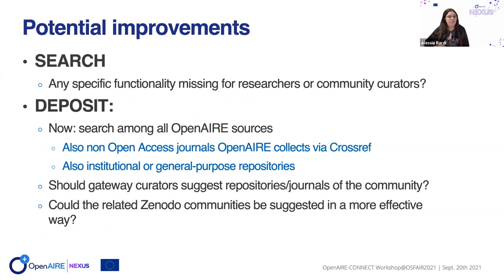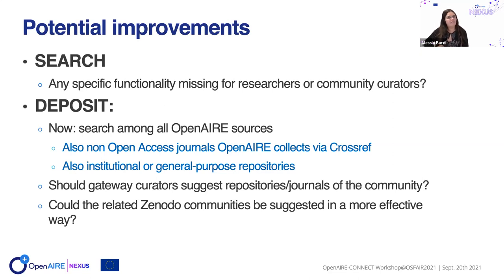Thinking about potential improvements: is there any specific search functionality or integration missing? Or something needed for community curators, or for the deposit functionality? Currently you can search among all OpenAir sources, which means you can also find non-open-access journals and institutional repositories that may be out of scope for a given community. We have some ideas, but it would be nice to have feedback to guide how we could change the approach and better support open access deposition and publishing in your community.